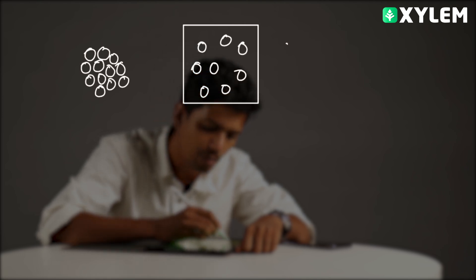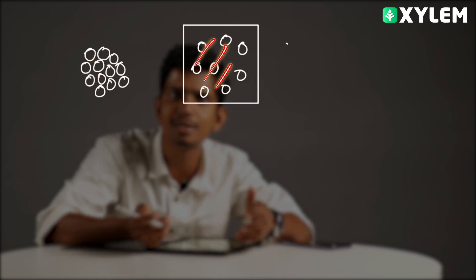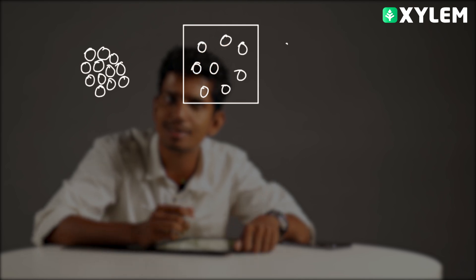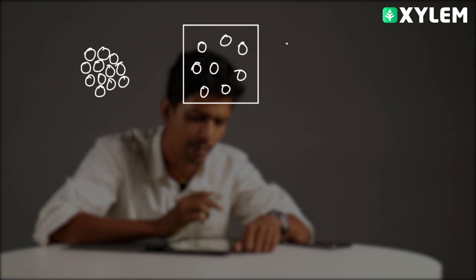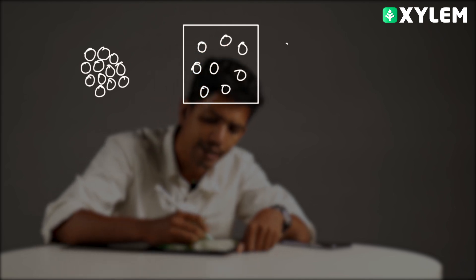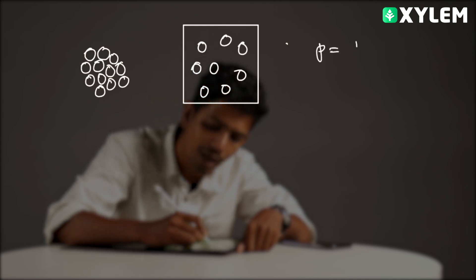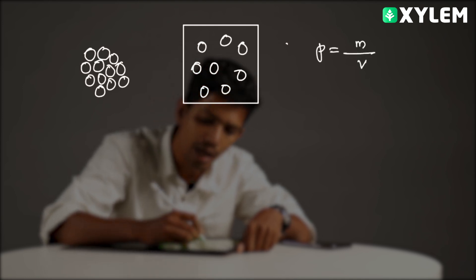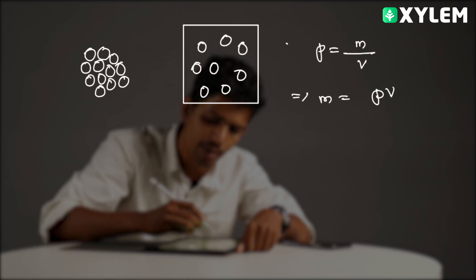If we take the mass of the water molecules and the mass of the water vapor, it is the same. Now, the basic question is: density equals mass divided by volume. That means mass divided by volume gives us density.